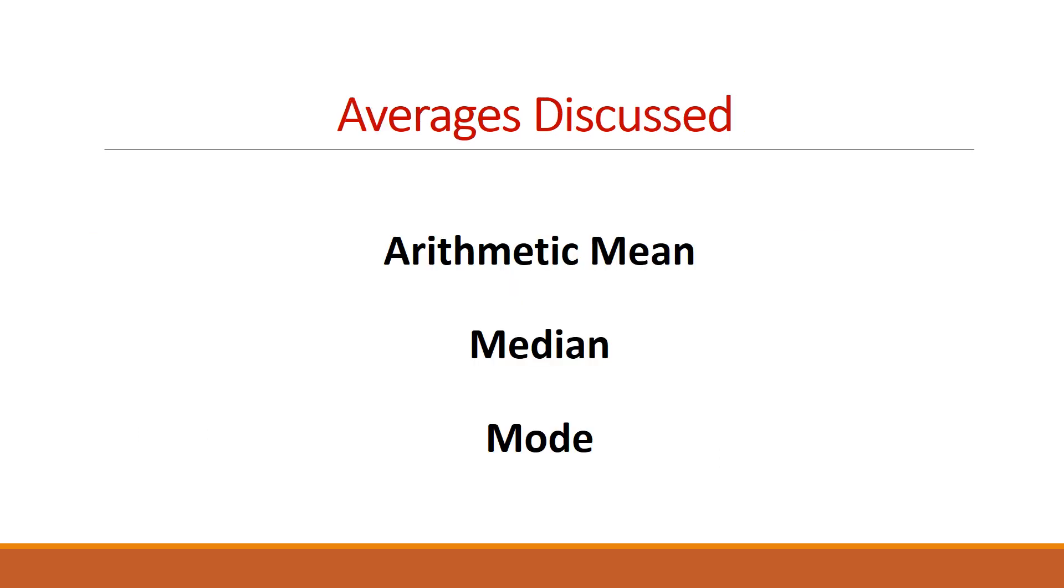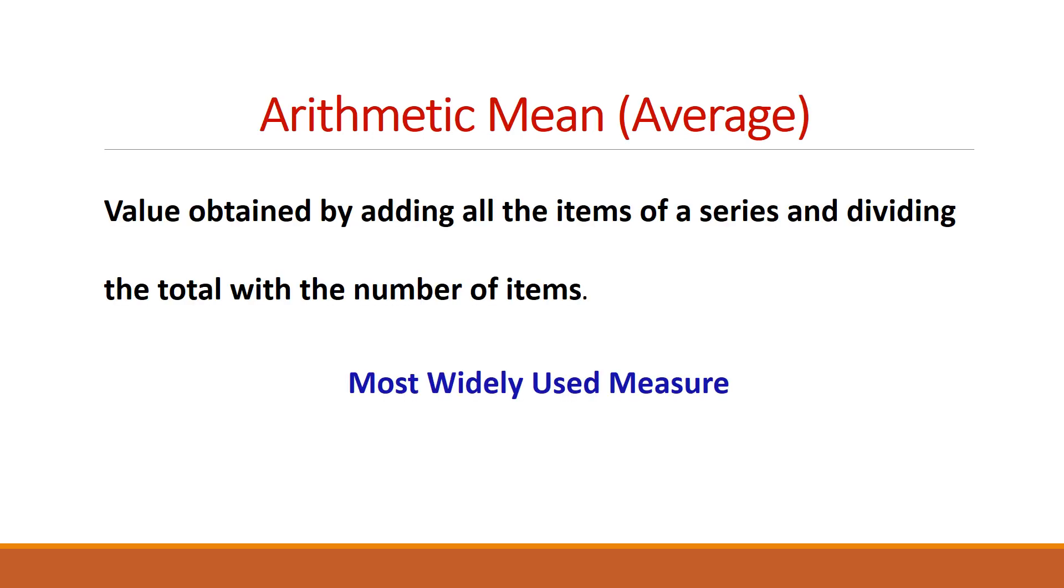In this video, we are going to discuss the most commonly used averages, which are the arithmetic mean, median, and mode. Let us see what is arithmetic mean. It is that value which is obtained by summing up all the items in a group and dividing the total with the number of items in the group. And mean is the most widely used measure and it is the best measure of average.